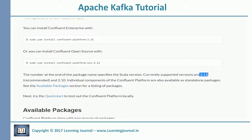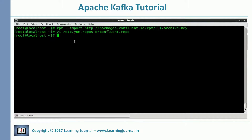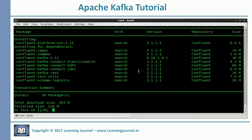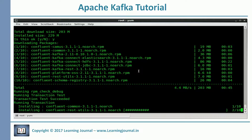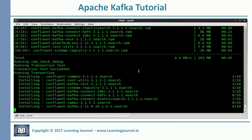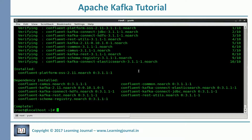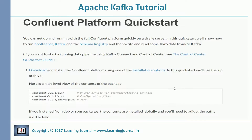The current Confluent platform version is 3.1.1 and it comes with Kafka 0.10.1. Both of these versions are the latest at the time of recording this tutorial. Once you execute the yum install command, it takes care of everything else. We installed Confluent platform — simple. Now we go and look at the quick start guide. We have completed the download and installation step, so we skip that part.